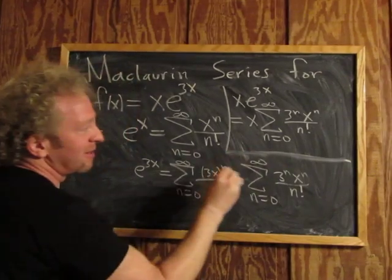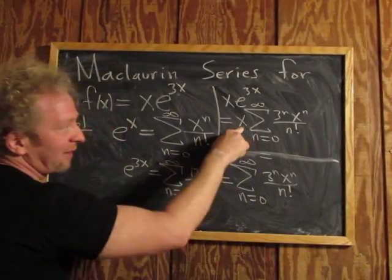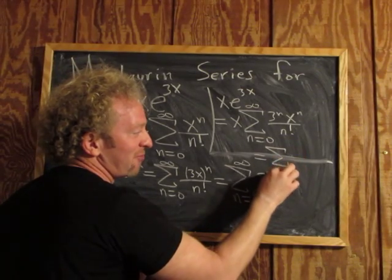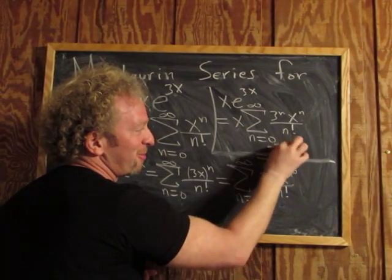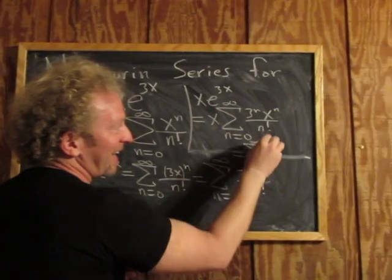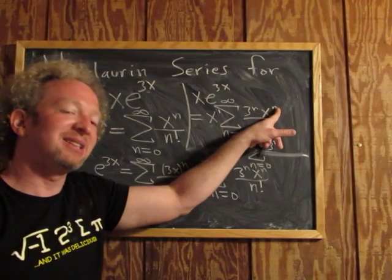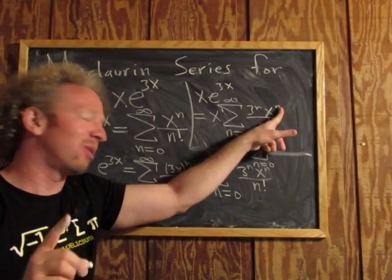And the final step here is to simply multiply the x by x to the n. So we have the infinite sum as n runs from 0 to infinity of 3 to the n, and x to the 1 times x to the n is x to the n plus 1.